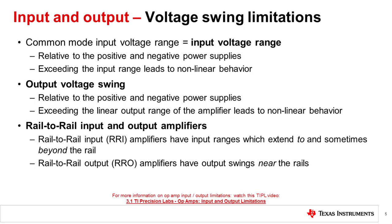To refresh on a previous TIPL op-amp video, let us review input voltage ranges and output voltage swings for op-amps. The common mode input voltage range, also known as the input voltage range, is measured right at the input of the op-amp. This term describes the range of input voltages that can be used for linear operation. The input voltage range is always defined relative to the power supply rails. When you exceed the input voltage range, the op-amp behaves non-linearly.